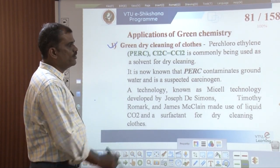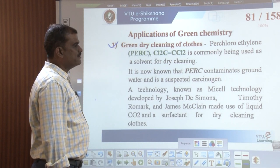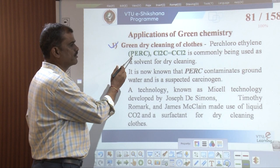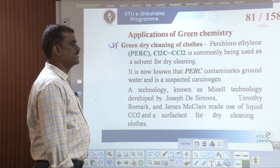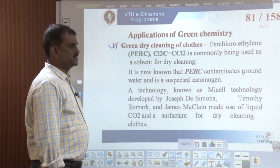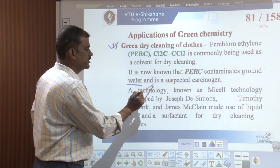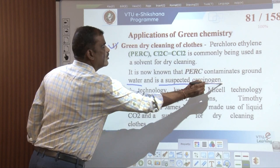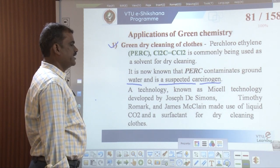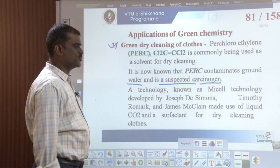We know perchloroethylene, or 1,1,2,2-tetrachloroethene, is commonly used as a solvent for dry cleaning. It was later found that this PERC contaminates groundwater and is also prone to being carcinogenic. A technology known as Muscle Technology was developed by Joseph D. Simmons,